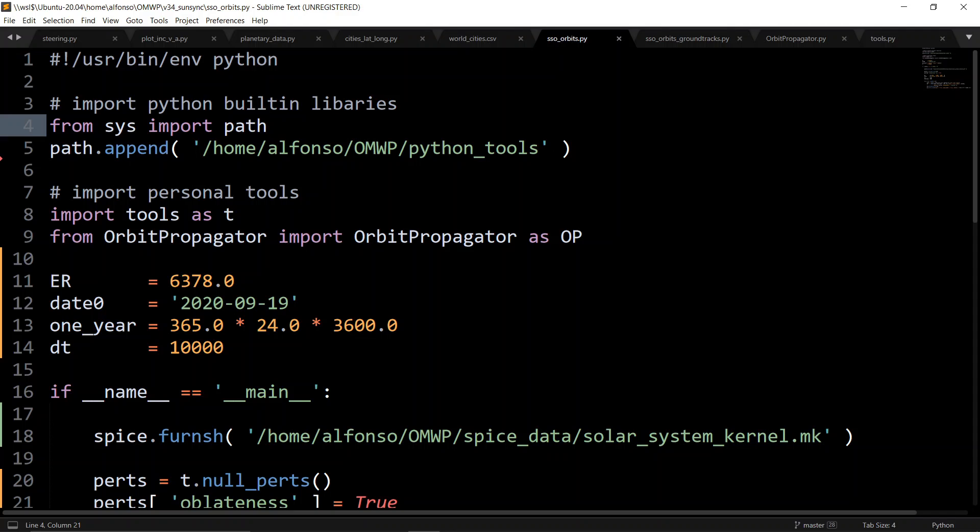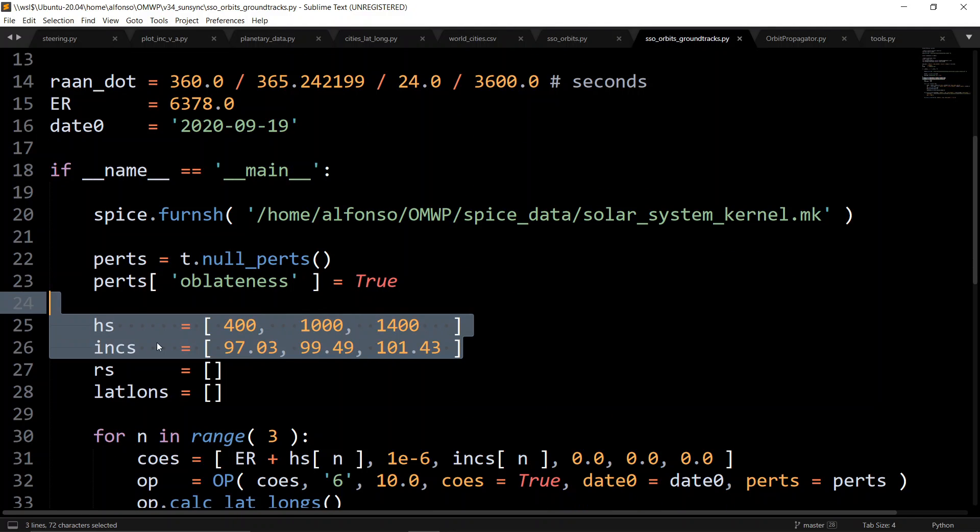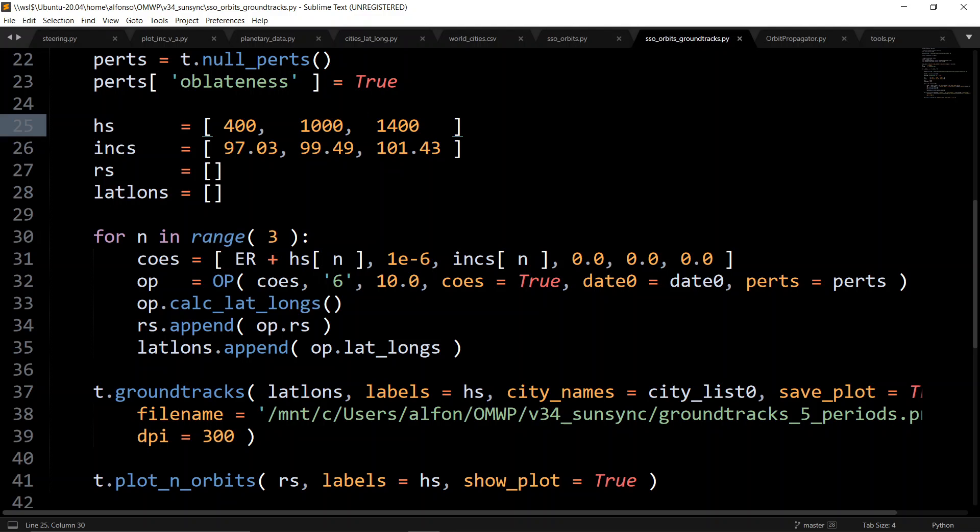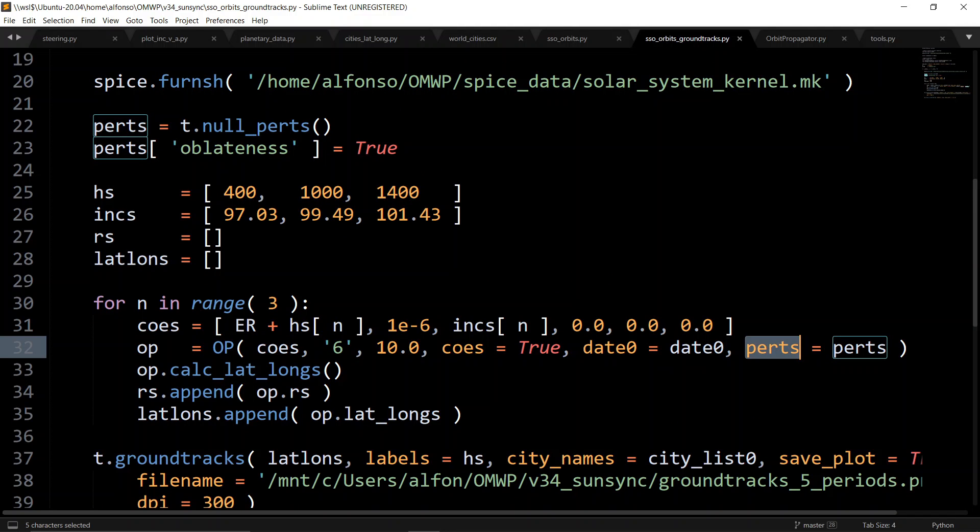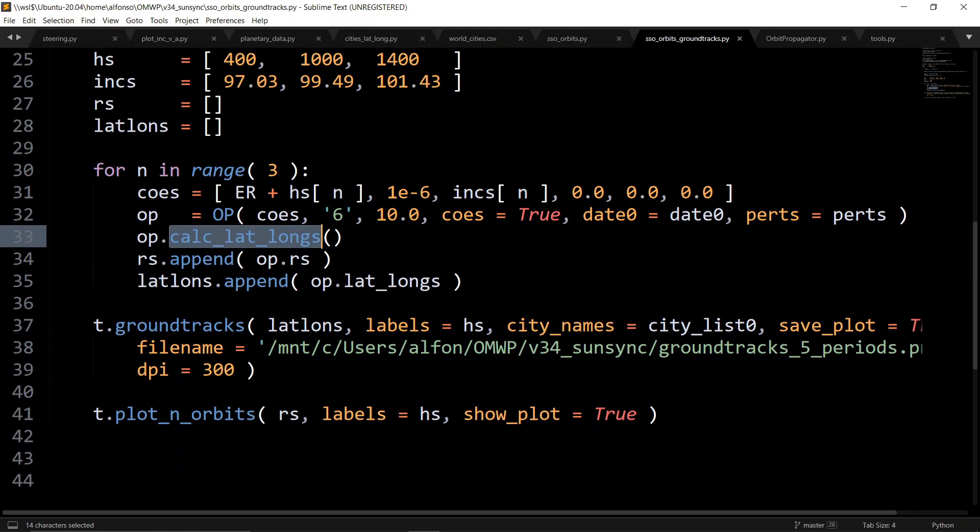Then I get those ground track orbits from plugging in just these three values that I had in the table, and then just going through orbit propagator, making sure I turned on the perturbations. Same thing with plotting the Keplerian orbit elements, make sure that J2 perturbation is turned on. Calculate the lat long, and then just plot the lat long. I also had a 3D plot, but it didn't really show much. That's how the ground tracks get made.